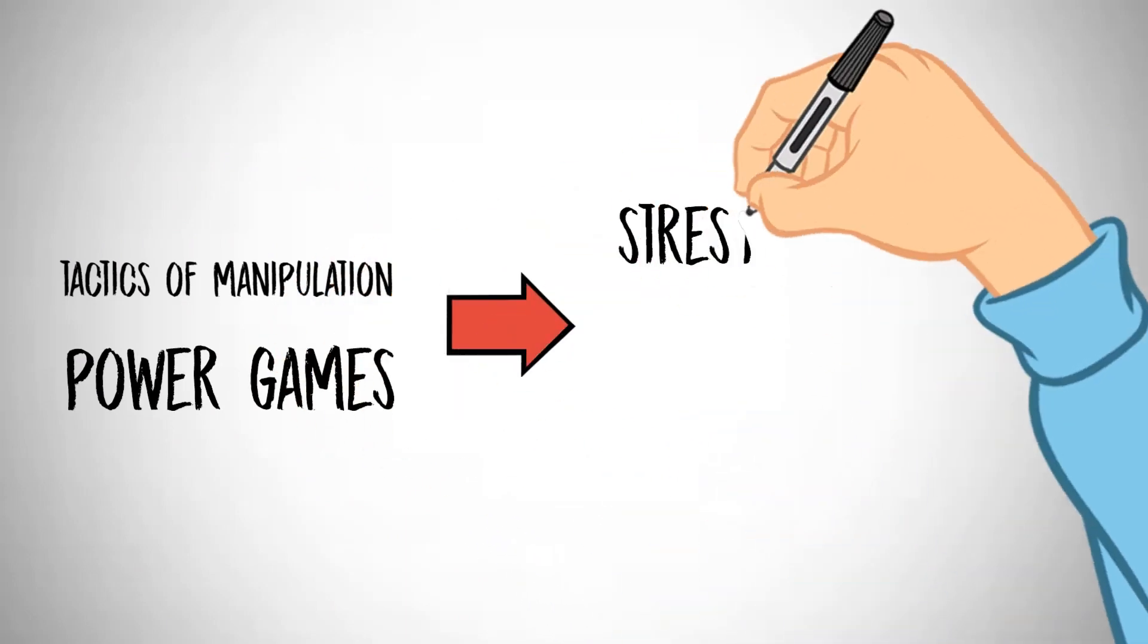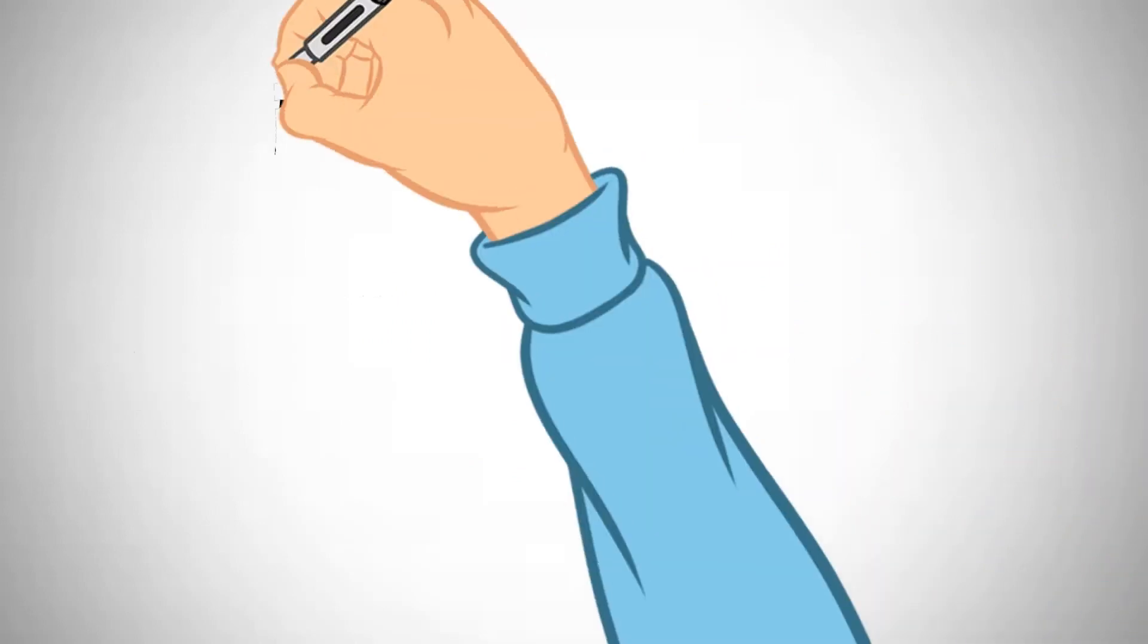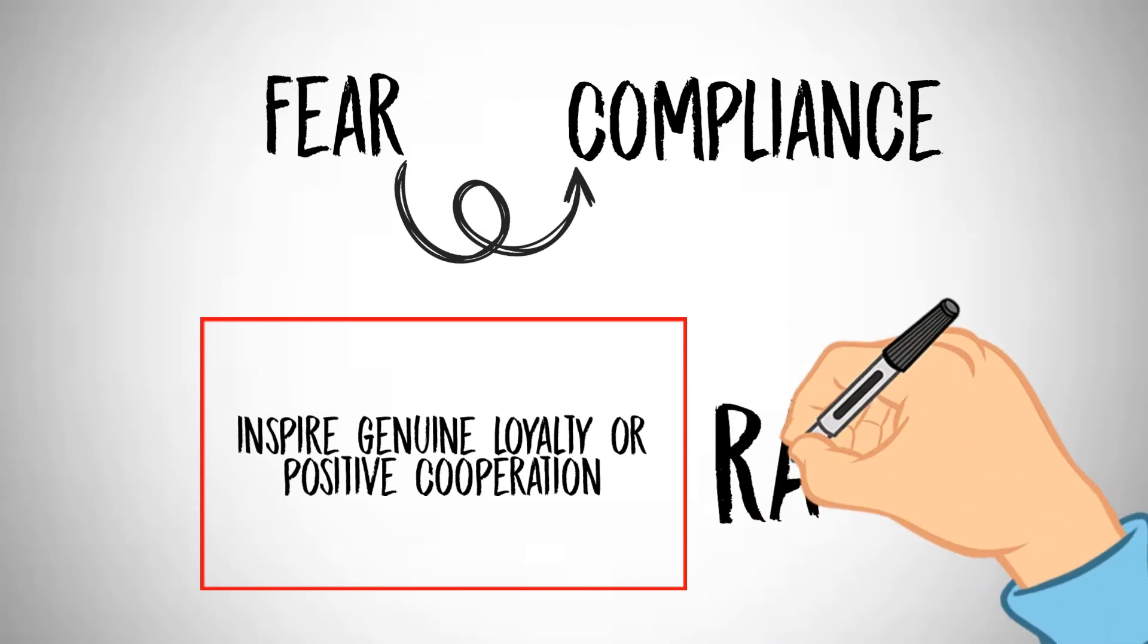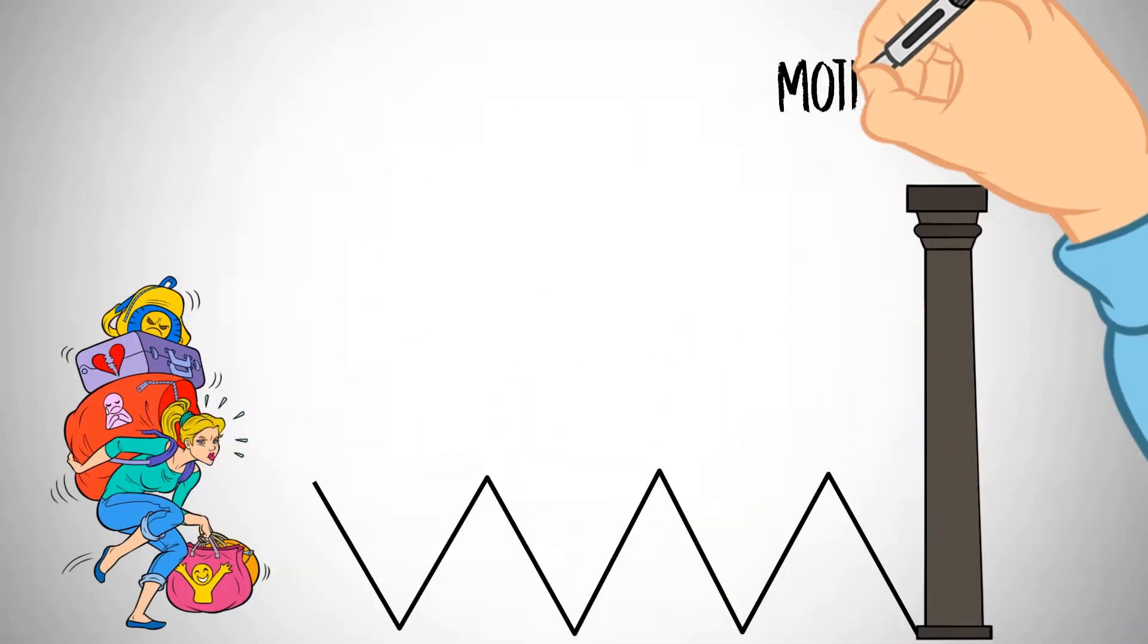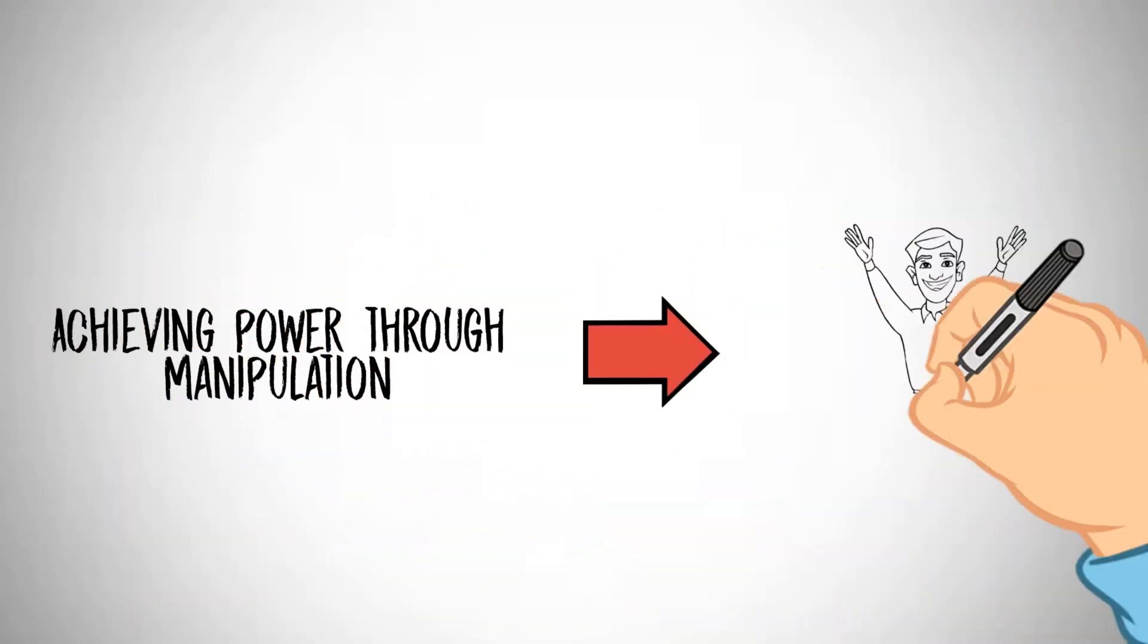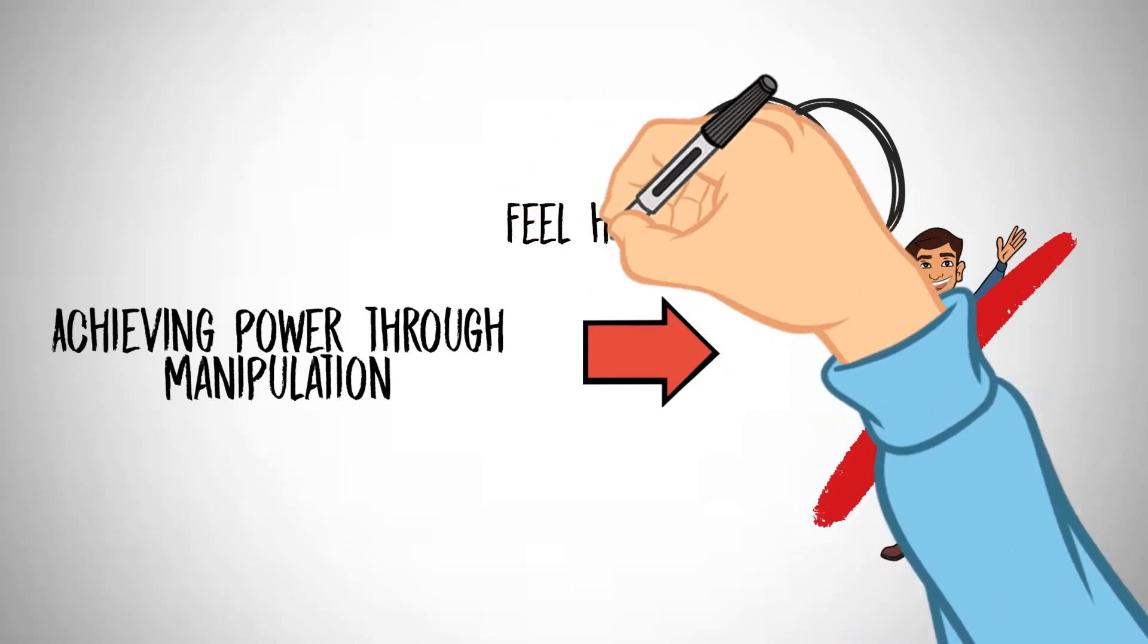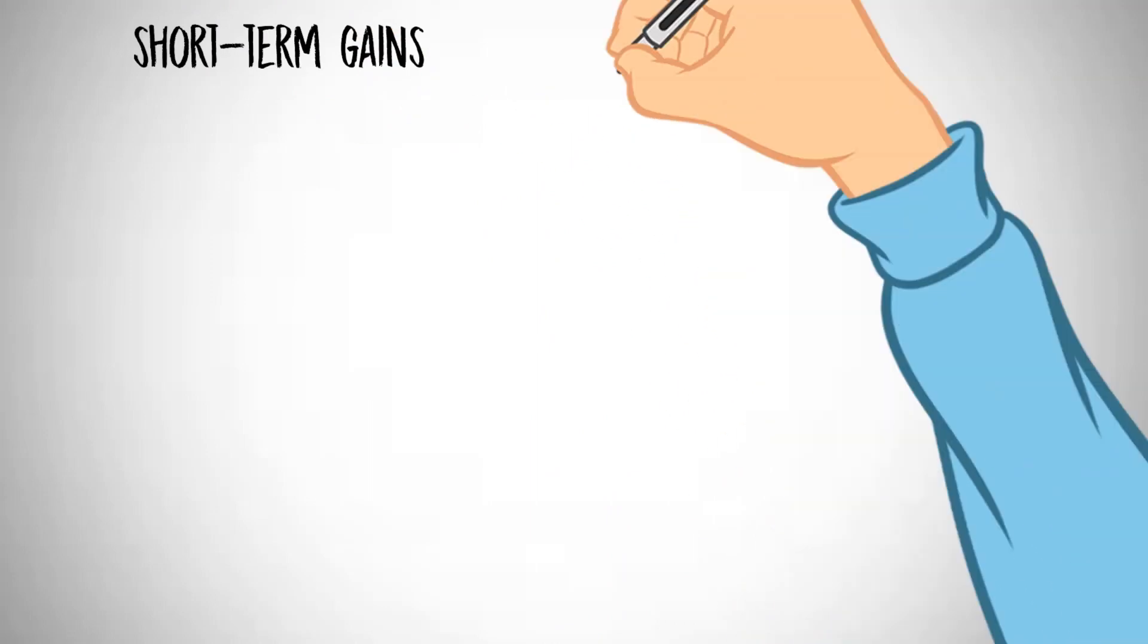Constantly employing tactics of manipulation and power games can be emotionally taxing. It can lead to stress, anxiety, and a constant need to guard against potential threats or rivals. Manipulation and fear might lead to compliance, but they rarely inspire genuine loyalty or positive cooperation. Leaders who rely on such tactics may struggle to maintain a motivated and cohesive team. Achieving power through manipulation doesn't necessarily lead to personal fulfillment.